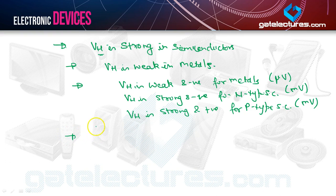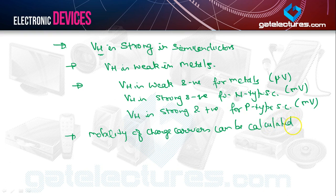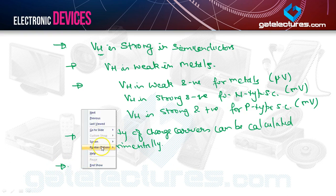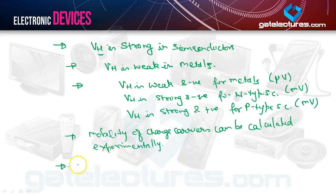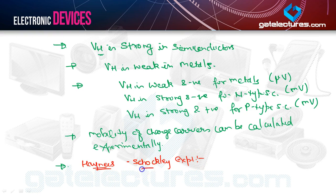Mobility of charge carriers can also be calculated experimentally. There is another experiment called the Haynes-Shockley experiment, which has been asked in previous examinations. The Haynes-Shockley experiment is used to calculate the mobility of minority charge carriers and the diffusion constant of minority charge carriers.